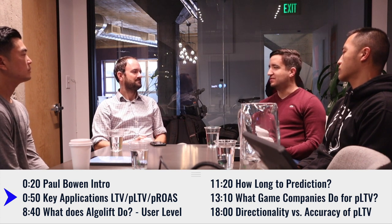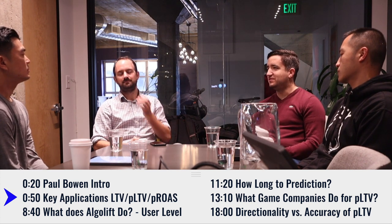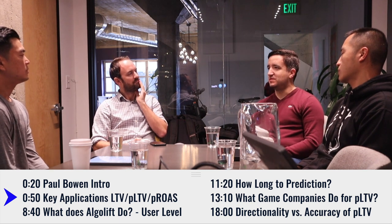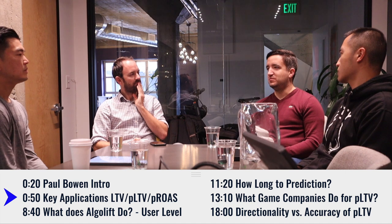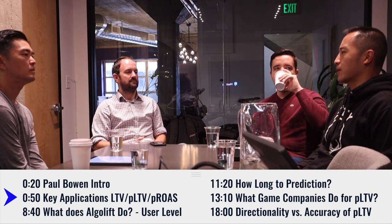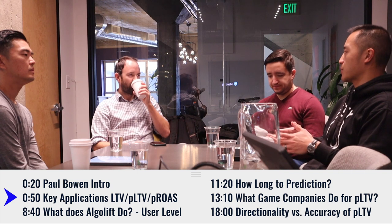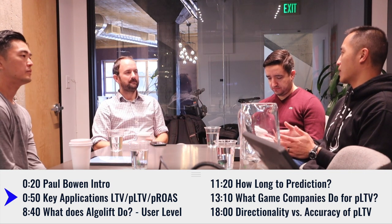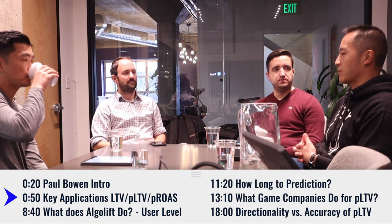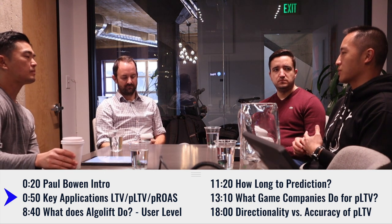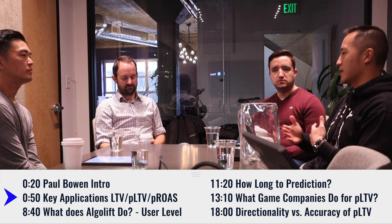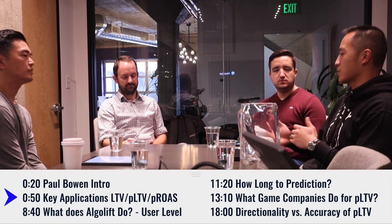Ideally, you should understand what's going on after a week or maybe a few days and be able to make decisions based on the outputs of the predictability model. If you go back to the beginnings of mobile smartphones, early developers had the luxury to wait — they didn't have as many competitors and didn't have to worry about cost of acquisition as much. Nowadays it's very different: you have a lot of competitors and cost of acquisition is always rising.